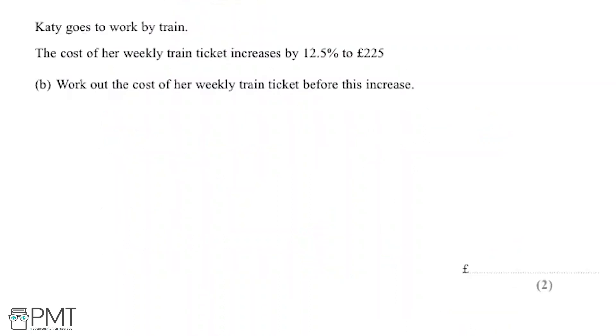Katie goes to work by train. The cost for a weekly train ticket increases by 12.5 percent to £225. Part B says we need to work out the cost for a weekly train ticket before this increase.